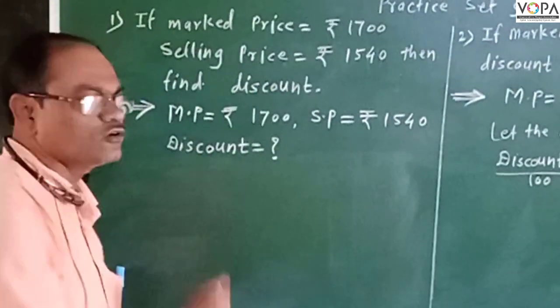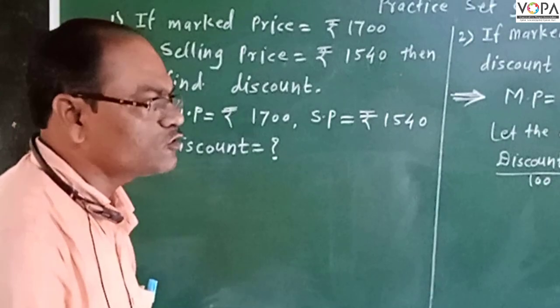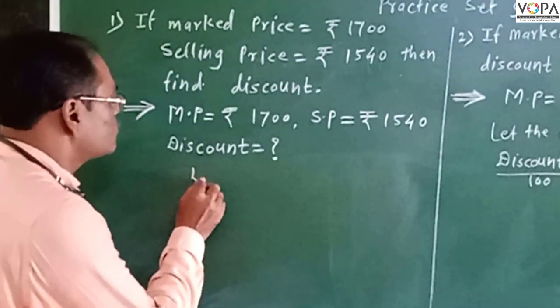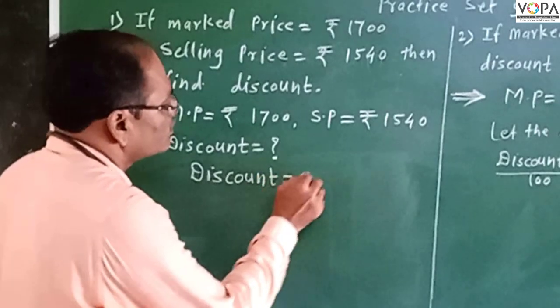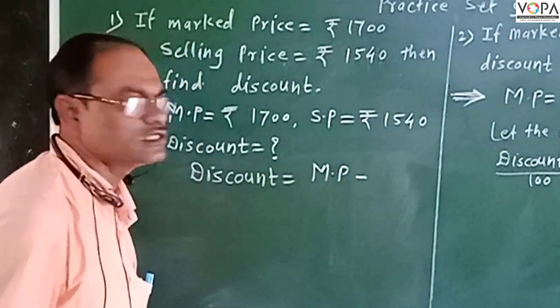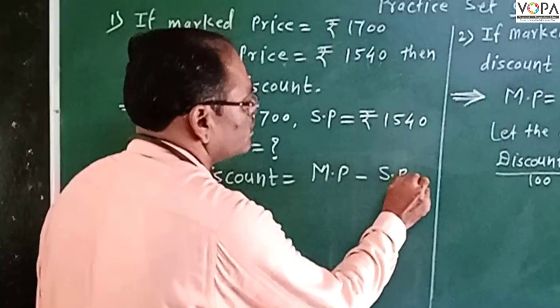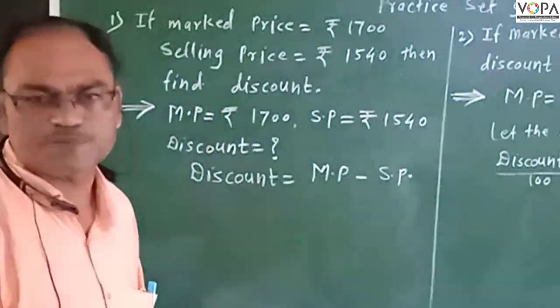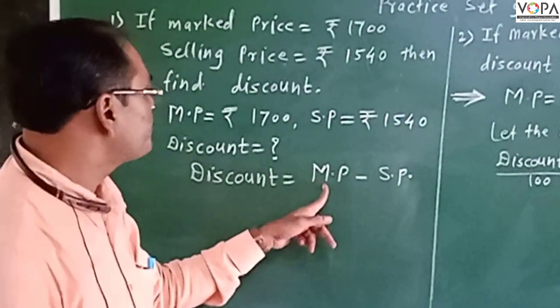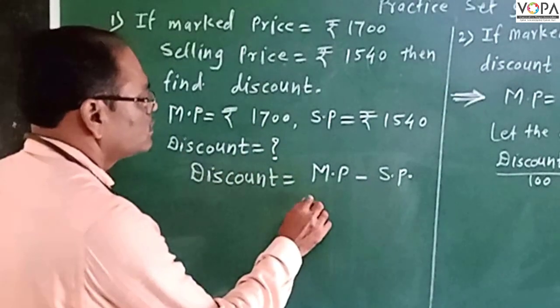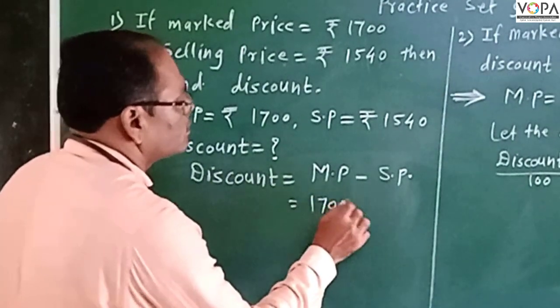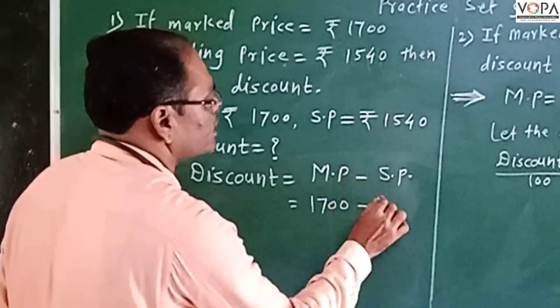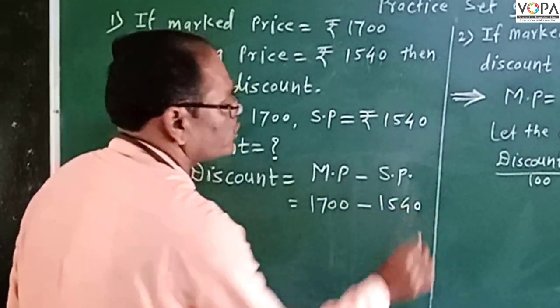We have to find the discount. We need to know the formula. The discount formula is: discount equals to marked price minus selling price, means MP minus SP. We have given MP that is ₹1700 minus selling price ₹1540.